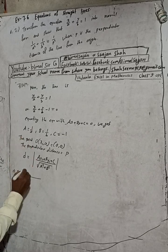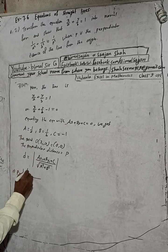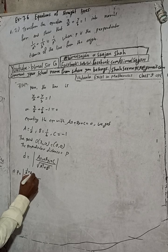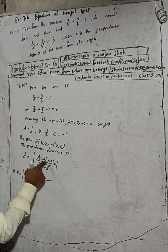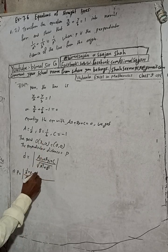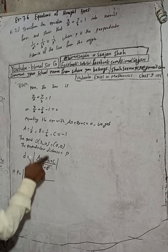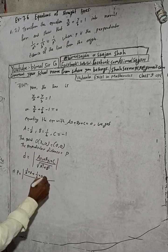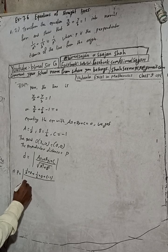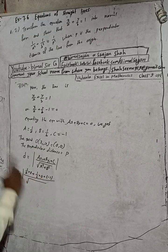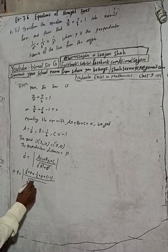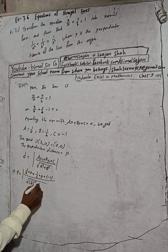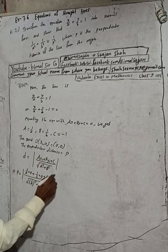So p equals, in place of a we can write 1/a into x₁, what is x₁? x₁ is 0. Plus b, what is b? b is here 1/b into y₁, what is y₁? 0. Plus c, here c equals minus 1, so minus 1. And now this is root under a² means what? 1/a² plus b² means what? 1/b².